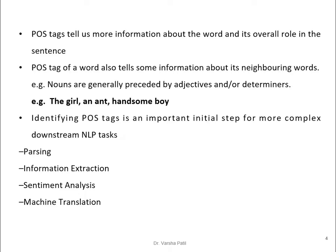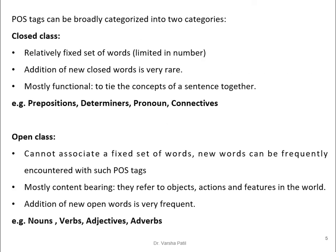POS tags of a word also provide information about its neighboring words — nouns are generally preceded by adjectives or determiners, for example 'the girl' and 'handsome boy'. Identifying POS tags is an important initial step for more complex downstream NLP tasks such as parsing, information extraction, sentiment analysis, and machine translation.